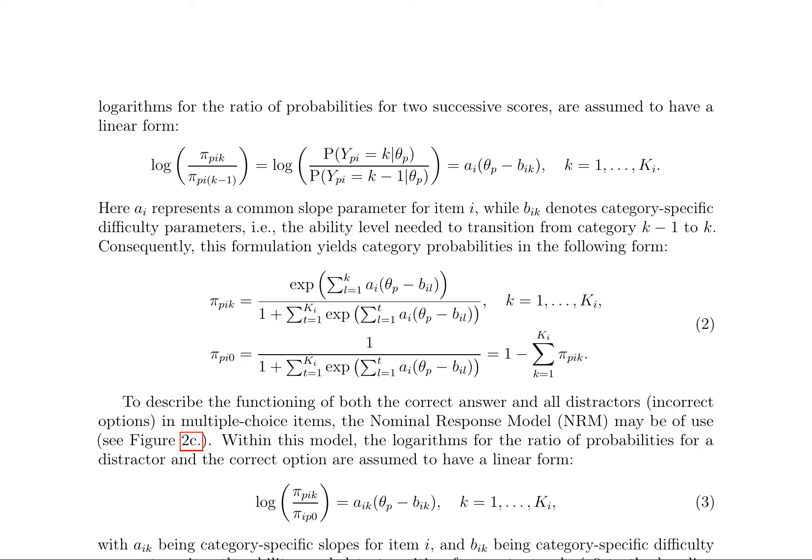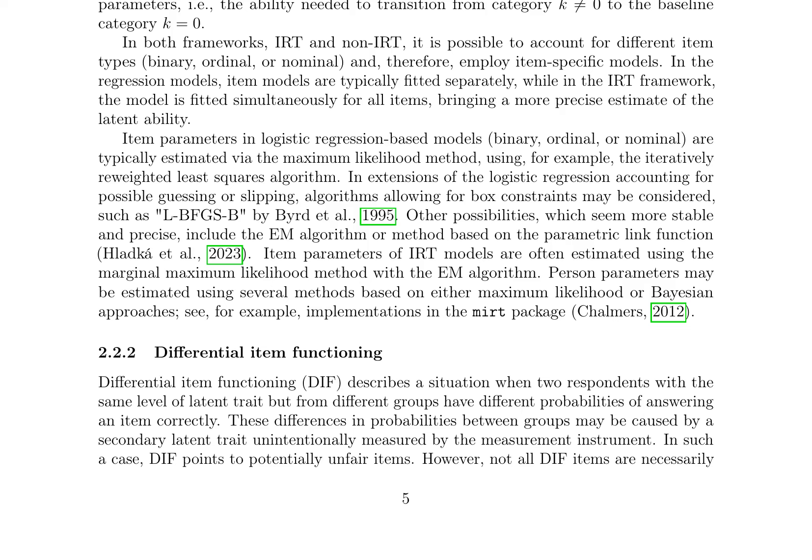Logistic regression models are used to describe the functioning of items in educational tests. These models can be extended to account for different item types and to include possible guessing or slipping when answering. Item parameters in logistic regression-based models are typically estimated via the maximum likelihood method. IRT models can also be used to describe item functioning and are often fitted simultaneously for all items, providing a more precise estimate of the latent ability. IRT models can also be used for DIF detection, where item parameters are estimated separately for two groups and then scaled, helping identify potentially unfair items.